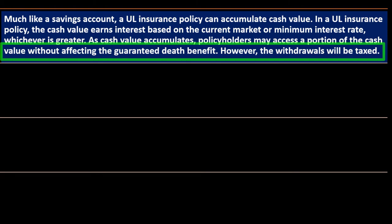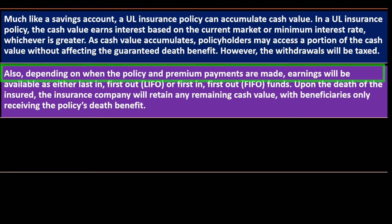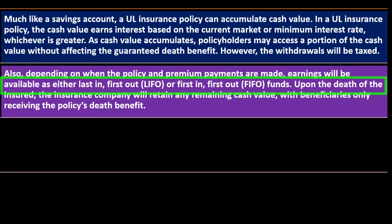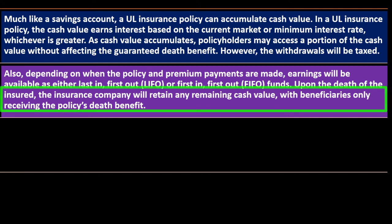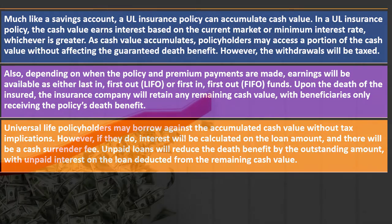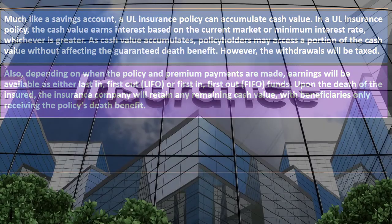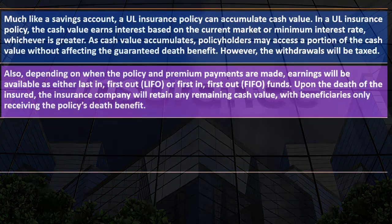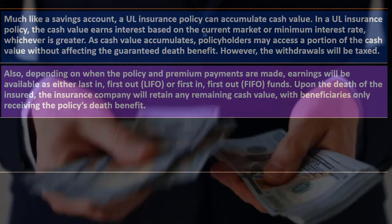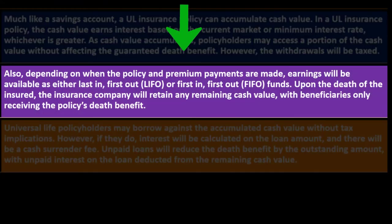However, the withdrawals will be taxed. Also, depending on when the policy and premium payments are made, earnings will be available as either last in, first out (LIFO) or first in, first out (FIFO) funds. Upon the death of the insured, the insurance company will retain any remaining cash value, with beneficiaries only receiving the policy's death benefit. The cash value goes up and lowers the risk to the insurance company, because if you were to die, they would pay out the death benefit and retain the cash value. So the cash value lowers the risk in the event of death.